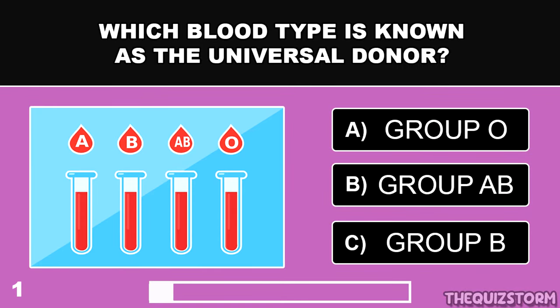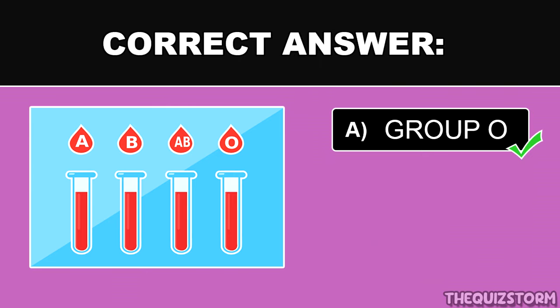Which blood type is known as the universal donor? And the correct answer is Group O.